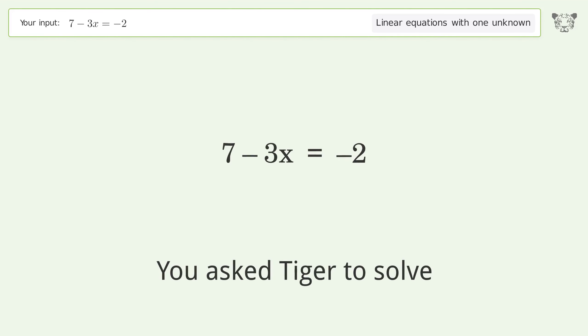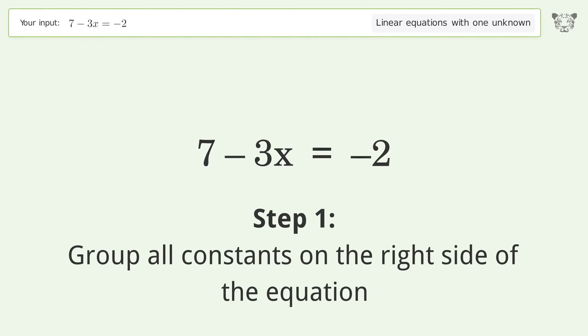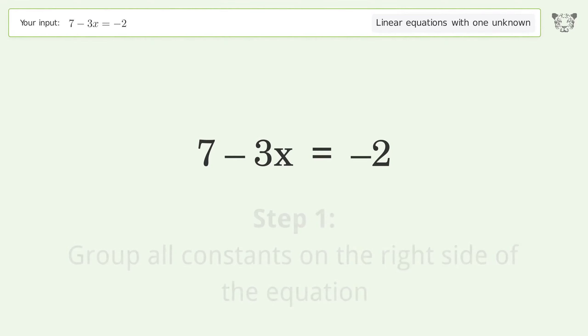You asked Tiger to solve this. It deals with linear equations with one unknown. The final result is x equals 3. Let's solve it step by step. Group all constants on the right side of the equation. Subtract 7 from both sides.